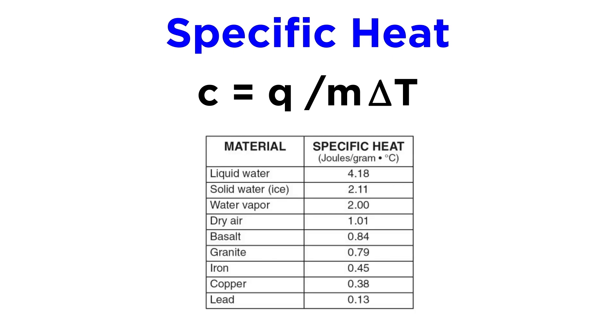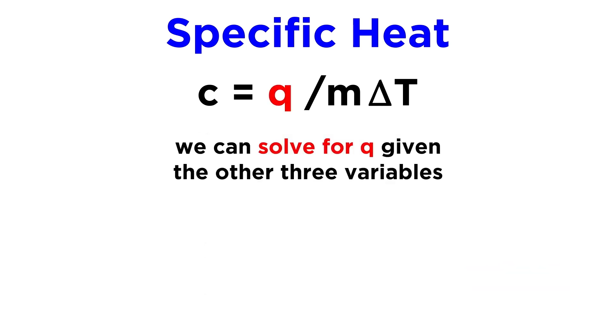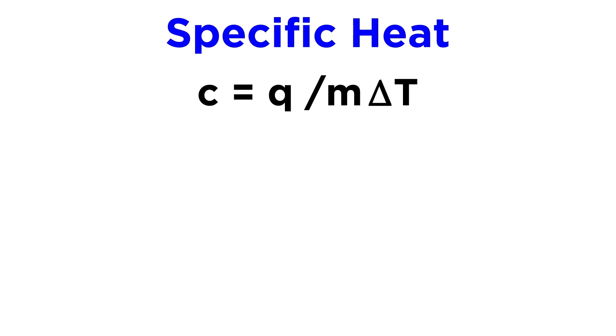Here are the specific heats of various substances. Notice that liquid water has a very high specific heat. Most metals, on the other hand, have rather low specific heats, along with a few gases. If we know the specific heat of a material, we can calculate the amount of heat exchanged during a process by measuring the mass and temperature change during the process. This requires a simple rearrangement of the original equation to give heat exchanged equaling the specific heat times mass times the change in temperature, or the final temperature minus the initial temperature.